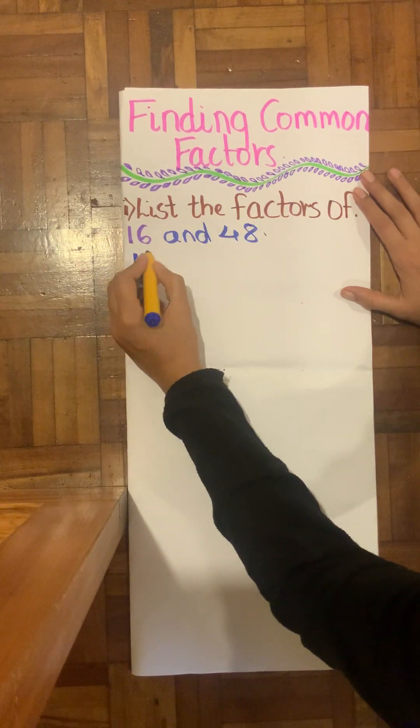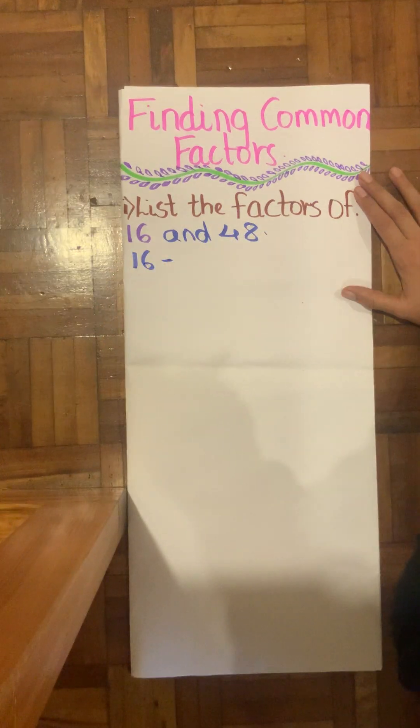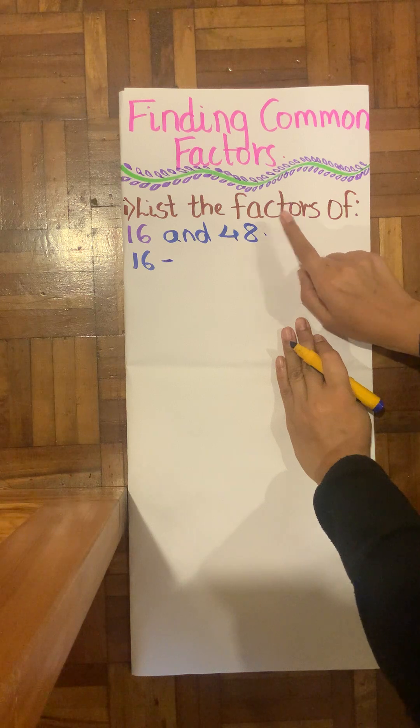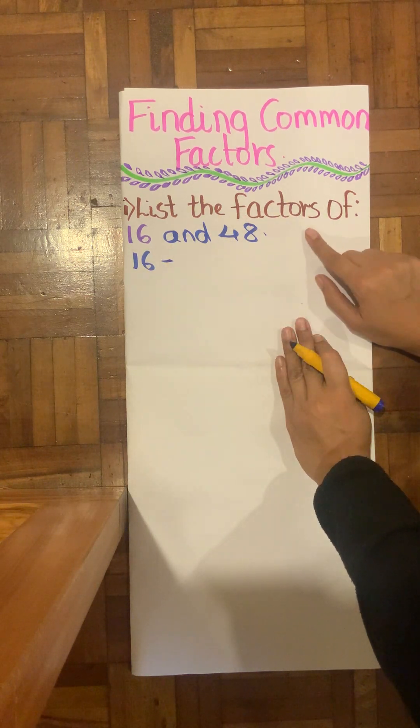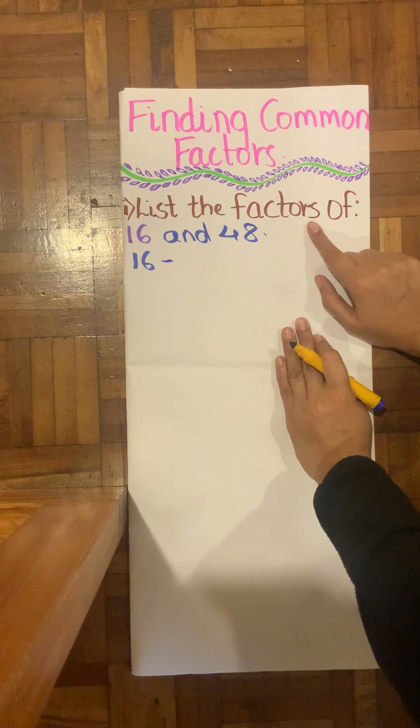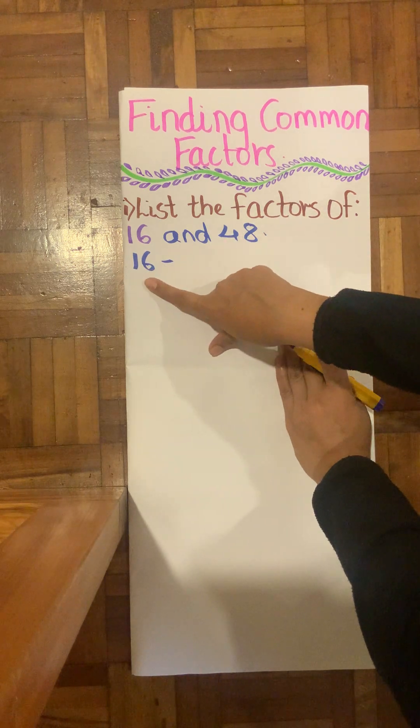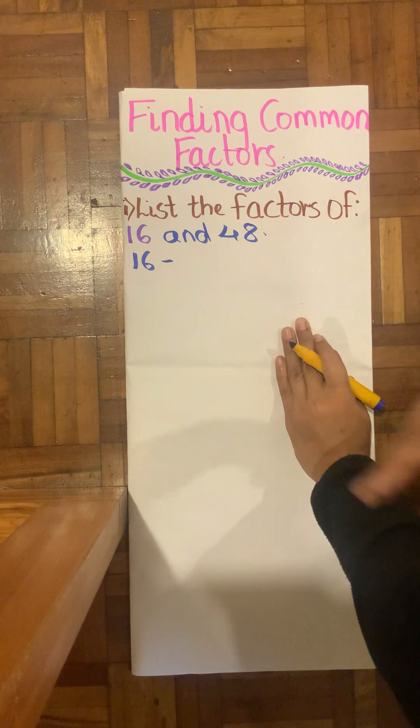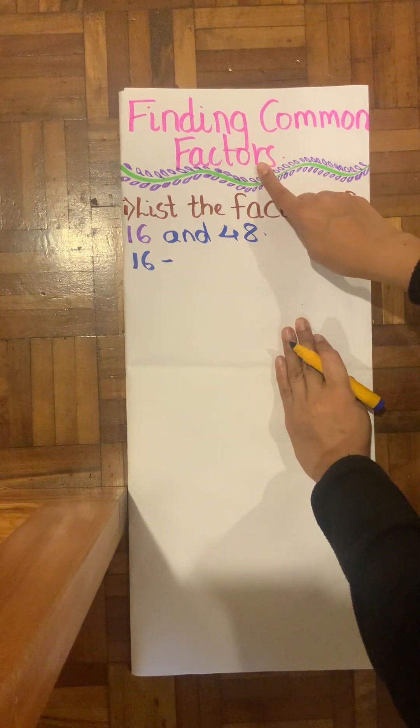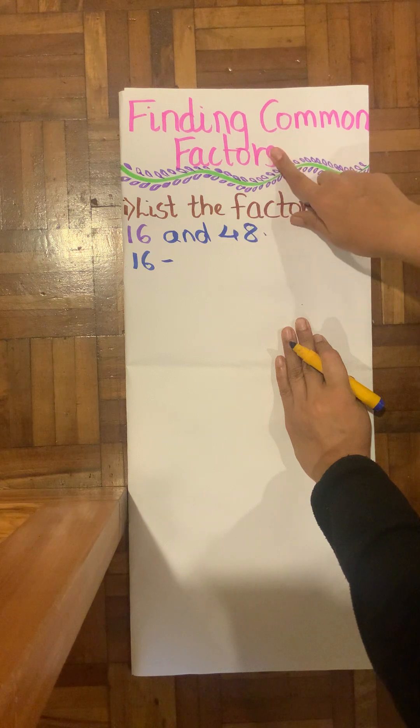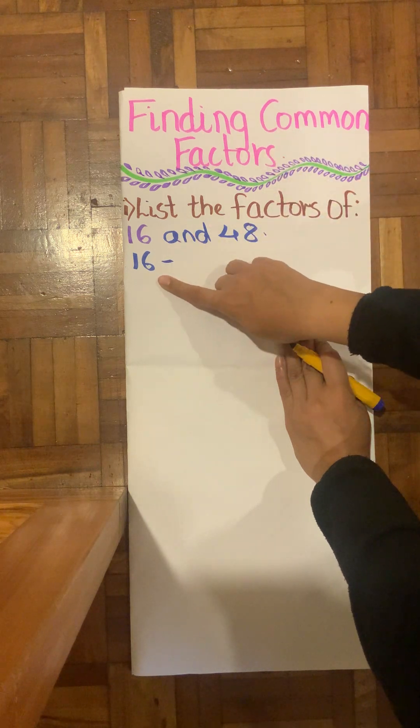First we'll find for 16. In order to find the factors, apparently they mean is in which table does 16 come. I repeat, finding factors is in which table does 16 come, or apparently in which tables. So we're going to find common factors. In order to find the common factors, first we need to find the individual factors.